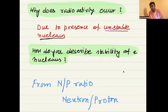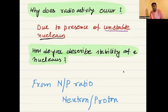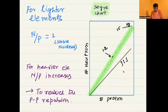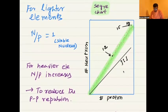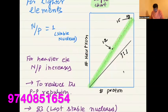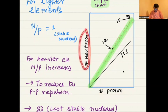We know that radioactivity is a property of the nucleus. The nucleus becomes unstable — that is the theory. Today we are going to look at the neutron-to-proton (N/P) ratio. You can see this chart: the Y-axis is the number of neutrons and the X-axis is the number of protons.